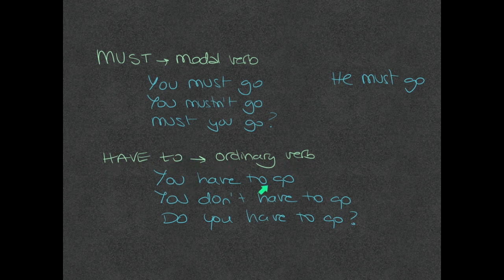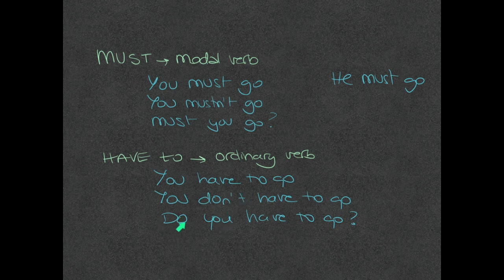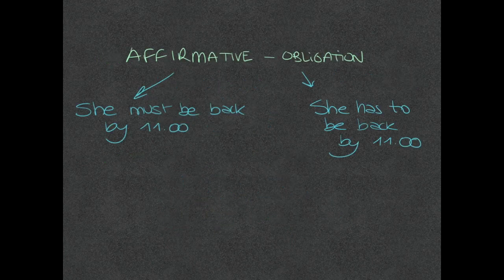However, when you use 'have to', because it is an ordinary verb, in the affirmative you say 'you have to go', in the negative 'you don't have to go', and in a question 'do you have to go?' So you need to use auxiliary verbs with 'have to'.